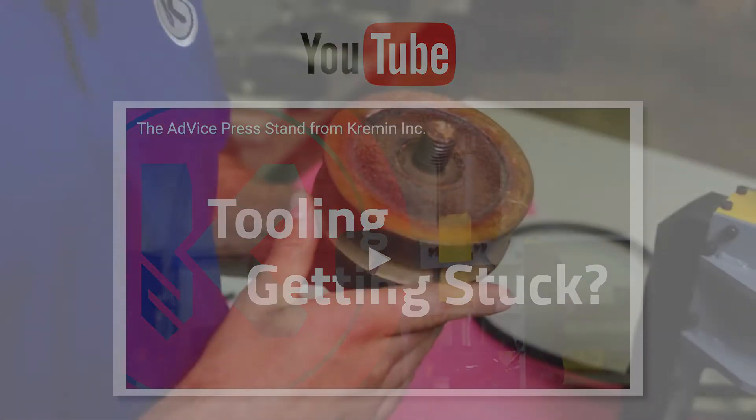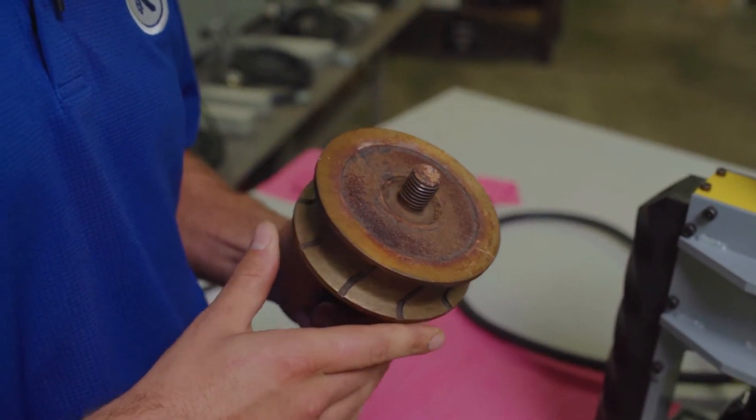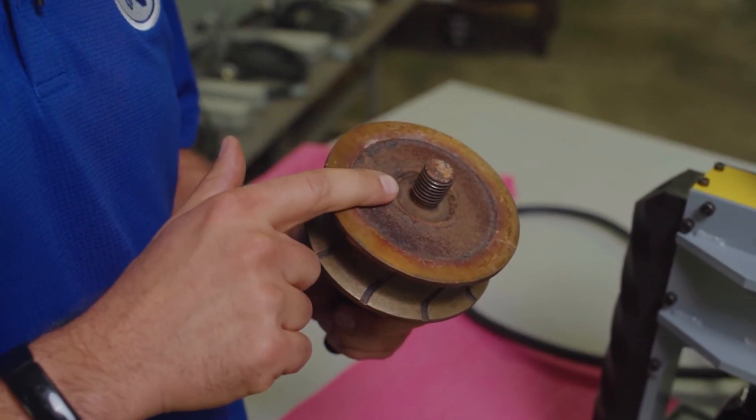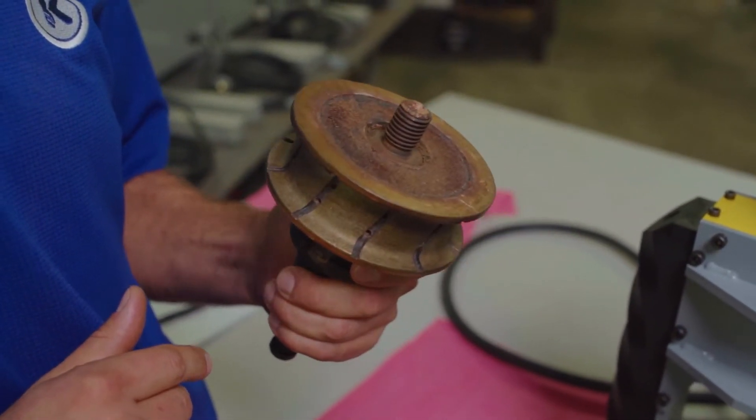There are a few very important things to remember when you're using your AdVice press stand. Number one, make sure you remove your nut or the locking kit off the end of the cone first before you put it into the press stand.